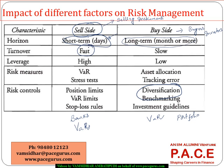For banks on the sell side, turnover has to be very fast, whereas from a buyer's perspective it is much lesser. Banks use heavy leverage, so the risk associated with liquidity and leverage is quite high from a sell side perspective. As an individual investor, one may not take that much leverage to hold positions, so leverage is slightly lower from a buyer's standpoint. The normal risk measures for the sell side are value at risk and stress testing — the traditional risk management approaches. But for individual investors, value at risk is only slightly considered nowadays.